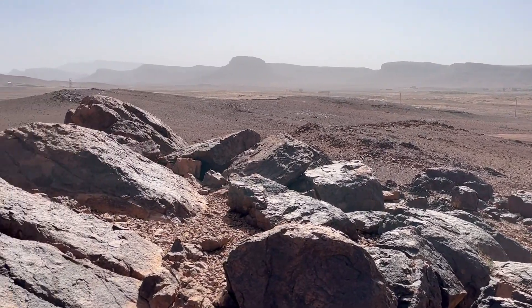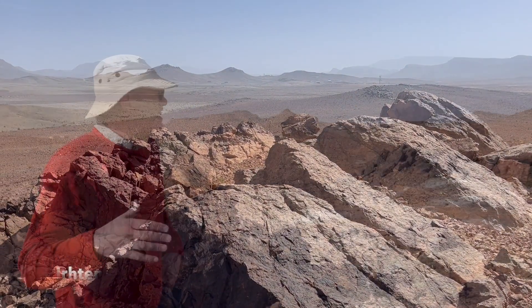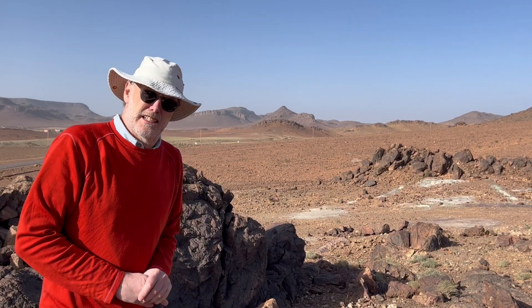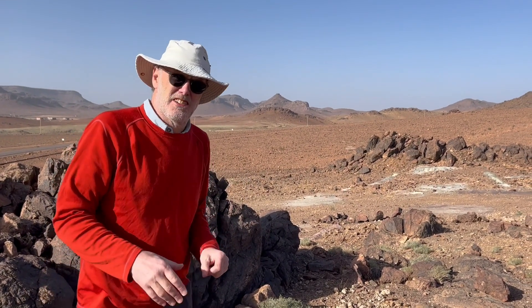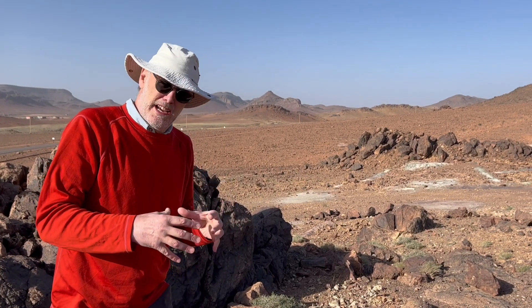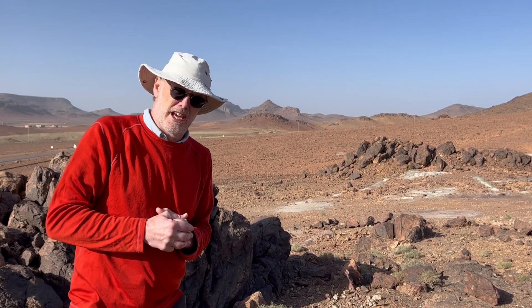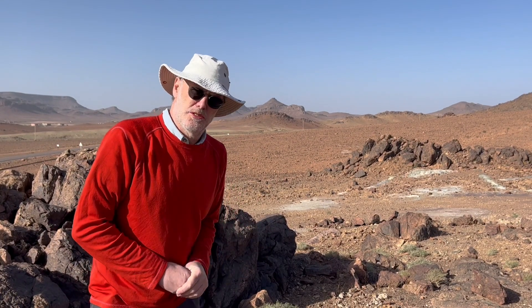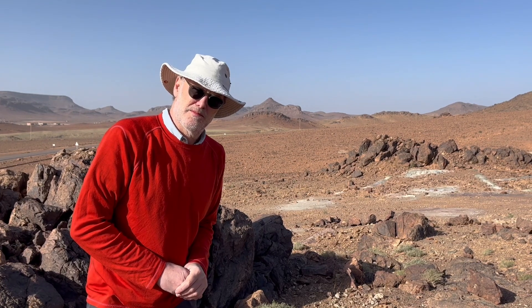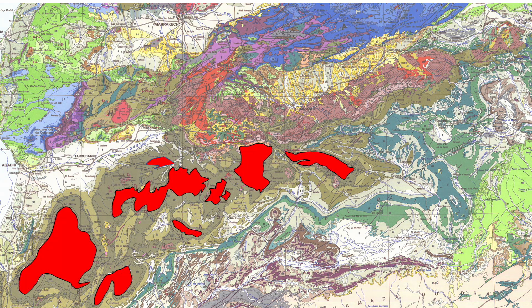This is the core of an anticline here in the Anti-Atlas, wrapped by Cambrian and late Precambrian sedimentary rocks. This material I'm sat around is the Precambrian substrate to the sedimentary cover. The French call this a boutonnier — a buttonhole — and it's a window, an inlier, to the older basement rocks. On the geological map we can highlight these boutonniers, the Precambrian cores to the anticlines.